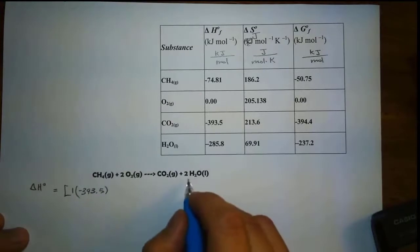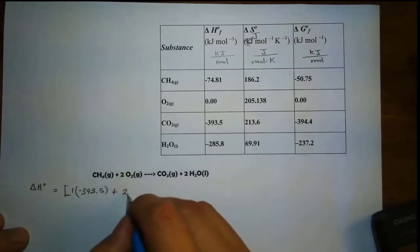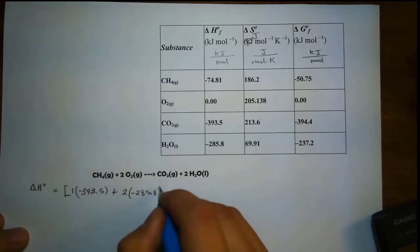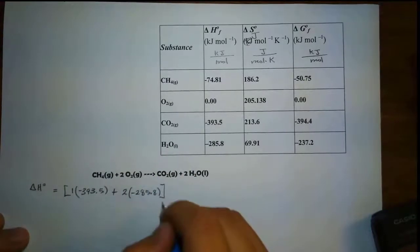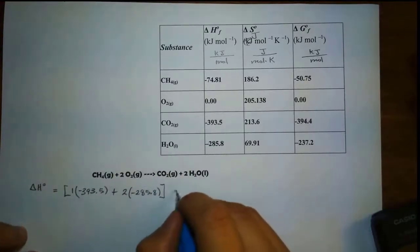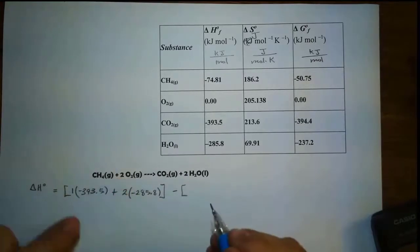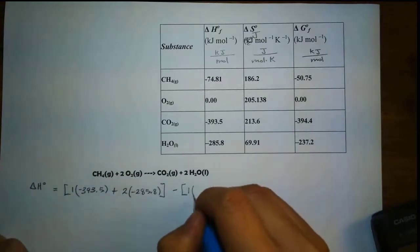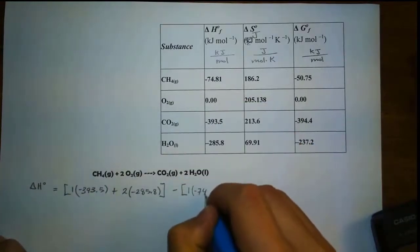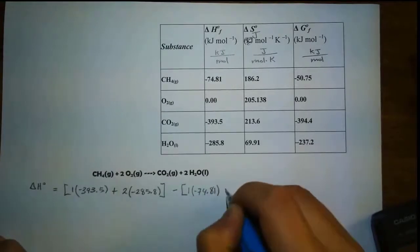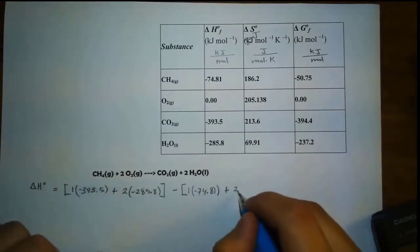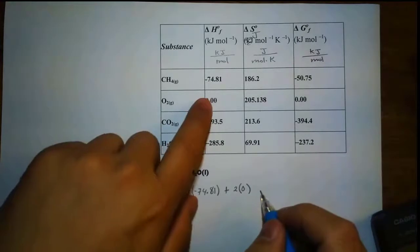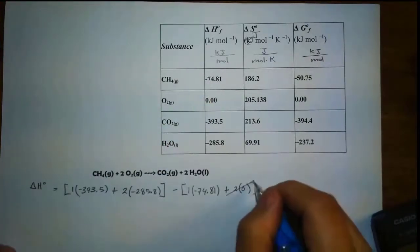We're going to add two moles of water, so plus two. The value for water is negative 285.8. That's it for the product, so we close it with a bracket and subtract the reactants. In this case, CH4: one mole, value negative 74.81. And two moles of oxygen — I know this is oxygen, it's an element, so it's zero. We can ignore that part.